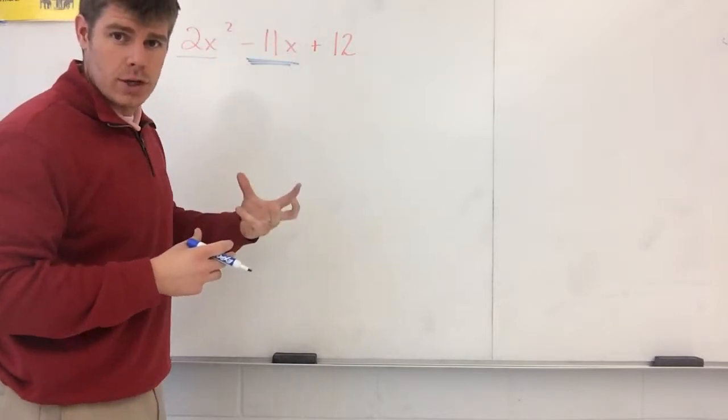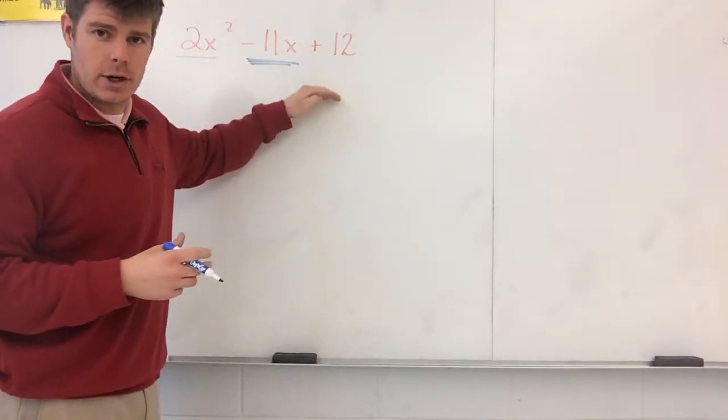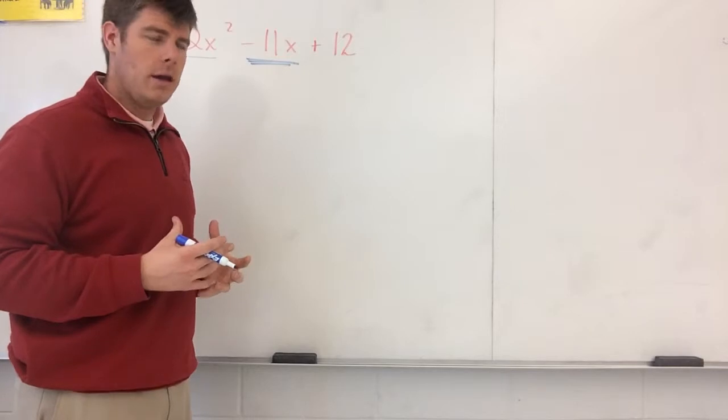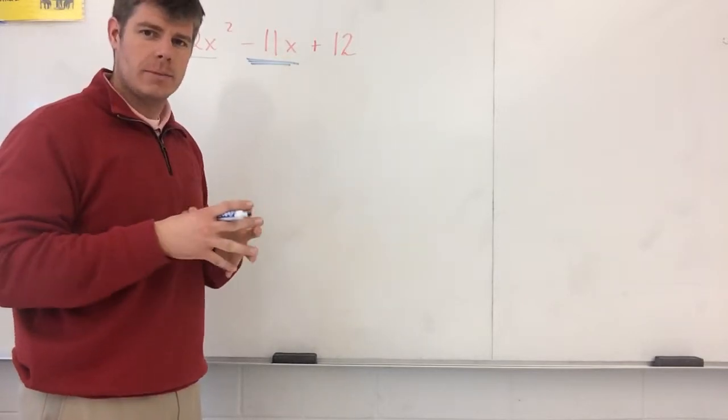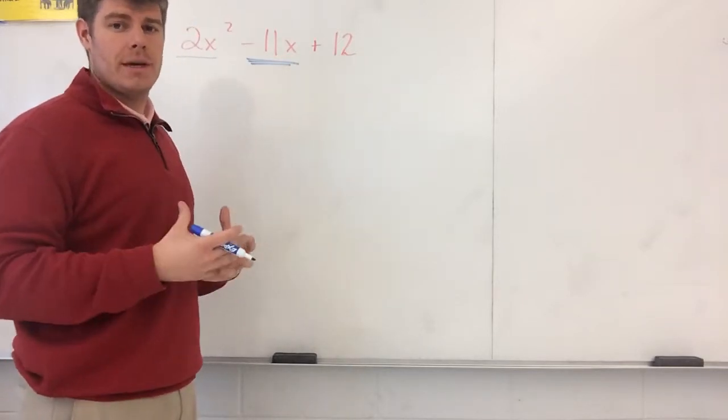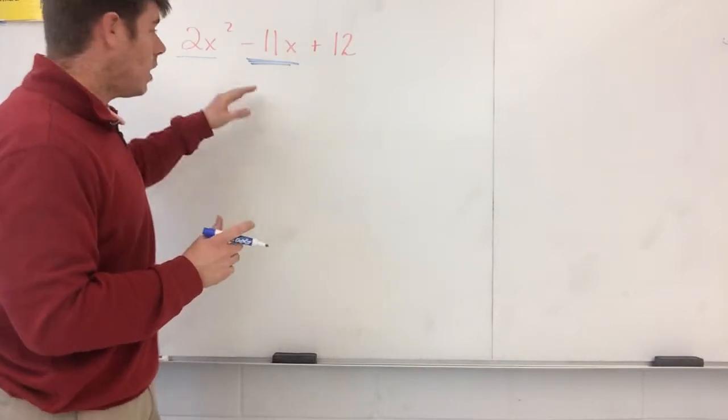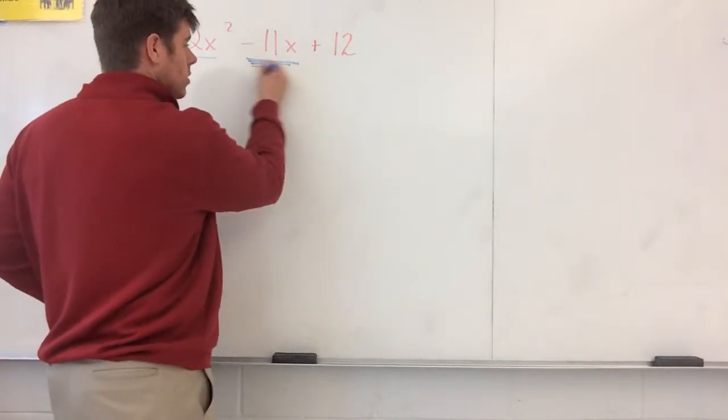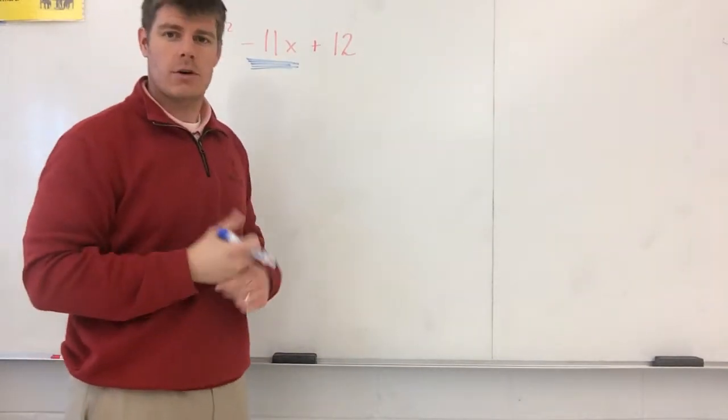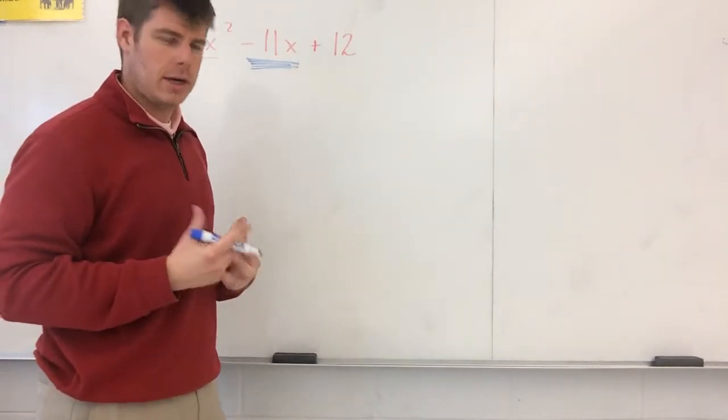So a binomial times a binomial has four terms, but our answer has three terms. So that means along the way, a pair of terms had to be combined. And with that being stated, after that multiplication happened and you combined your like terms, you'll see that generally it is always going to be this middle term here. And that is called the BX term. So that's the term we're trying to create.